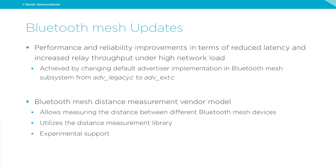Wrapping up Bluetooth, there are also Bluetooth Mesh updates. First, performance and reliability improvements: reduced latency and increased relay throughput under high network loads — packets between Mesh nodes arrive faster with less packet loss. This was achieved by changing the default advertiser implementation from adv_legacy.c to adv_ext.c. Second, a new vendor model for distance measurement has been added, allowing measurement of distances between Mesh devices utilizing the distance measurement library. This feature currently has experimental support.